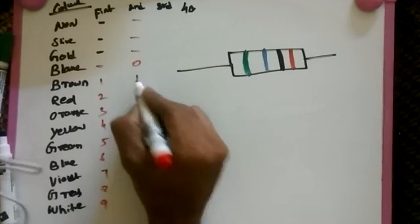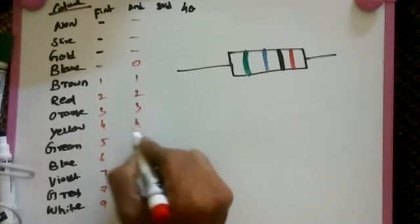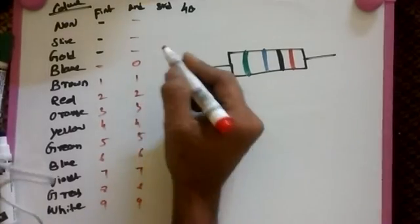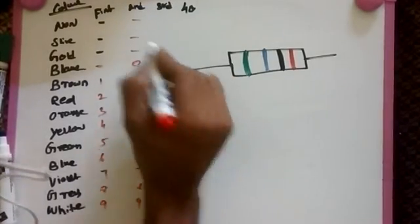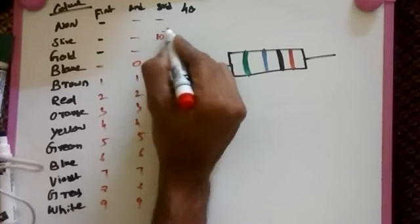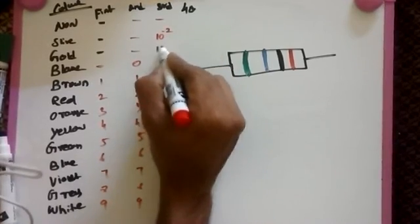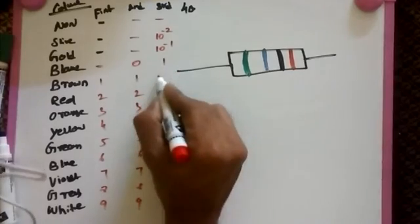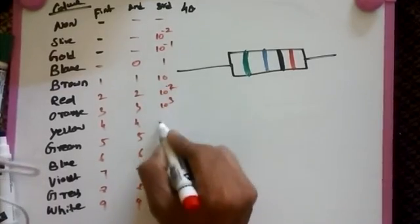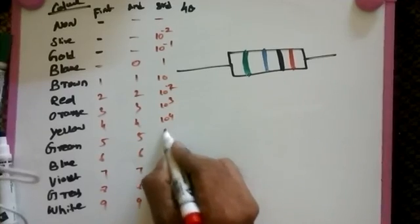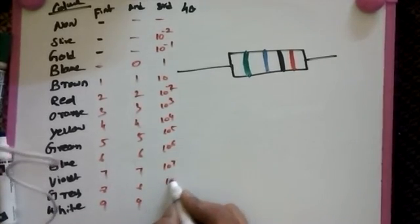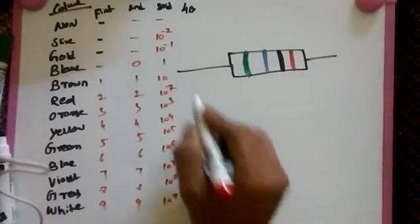In third band, all the colors will occur but none is not occurred in third band. So in third band silver is 10 to the minus 1, black is 10 to the 1, 10 to the 2, 10 to the 3, 10 to the 4, 10 to the 5, 10 to the 6, 10 to the 7, 10 to the 8, 10 to the 9.